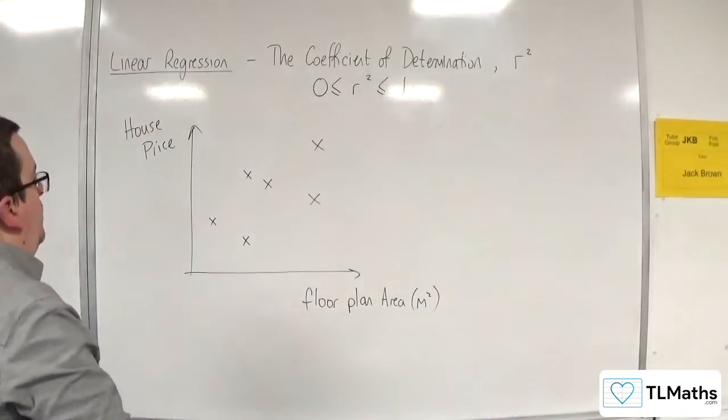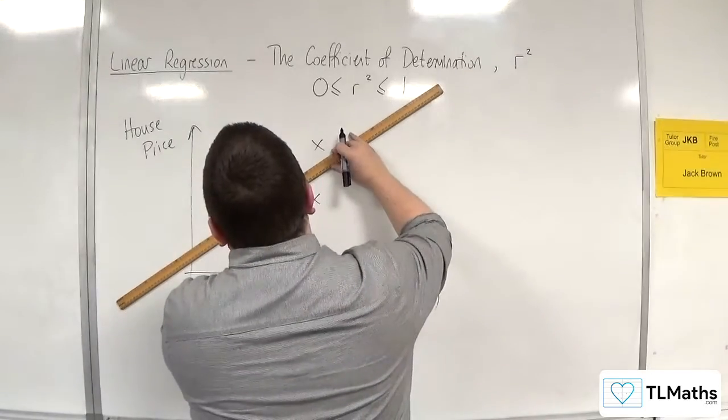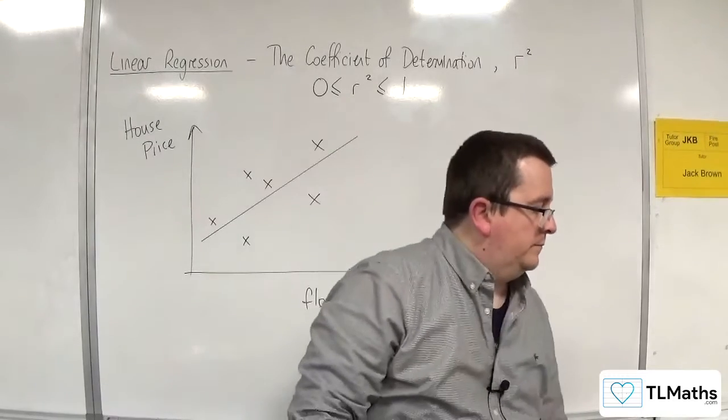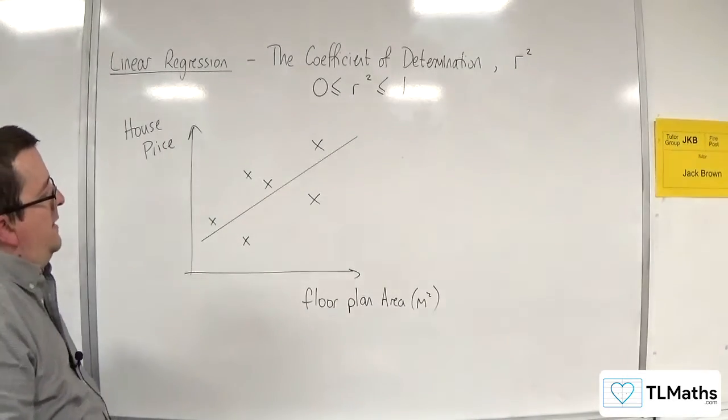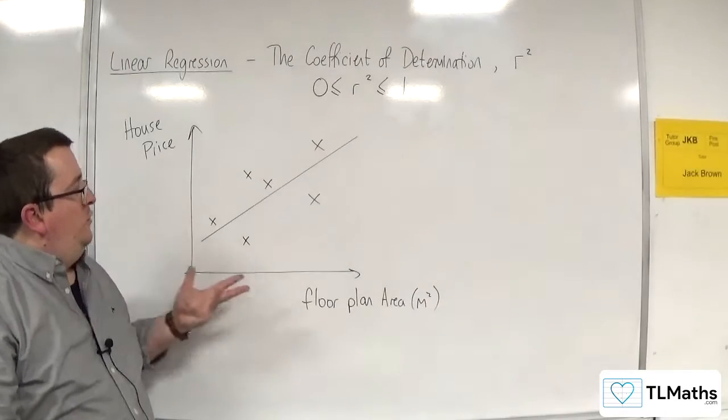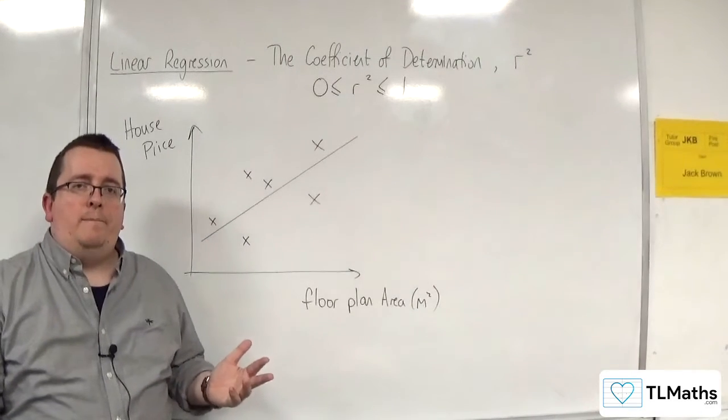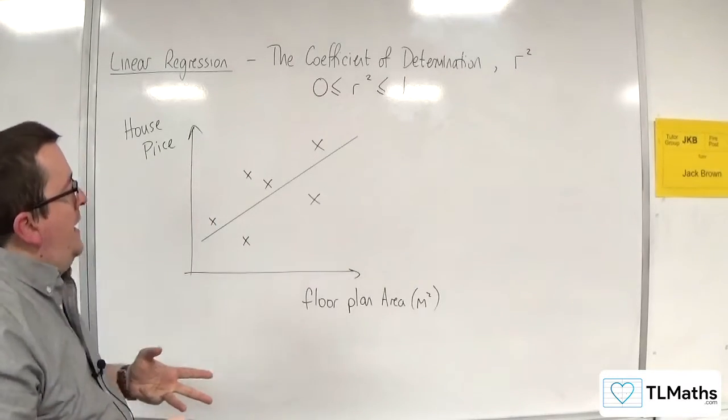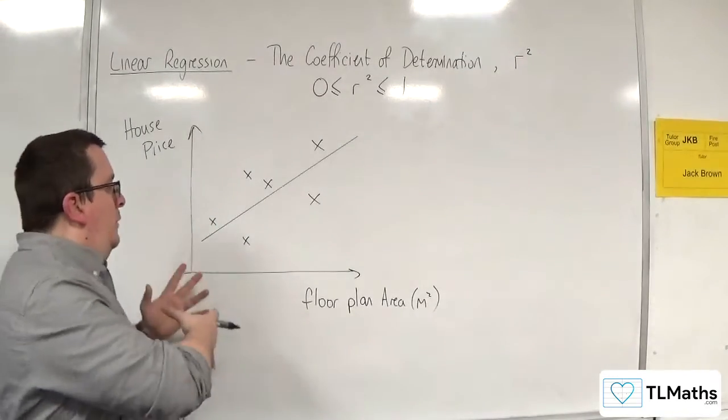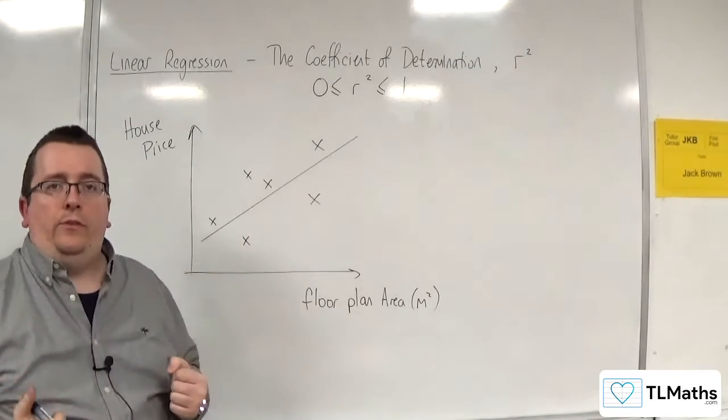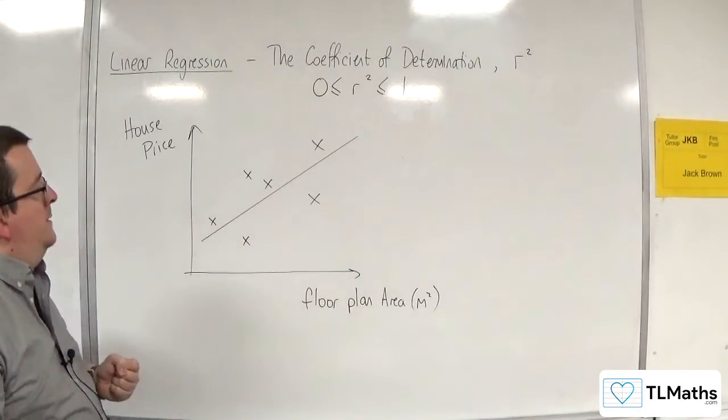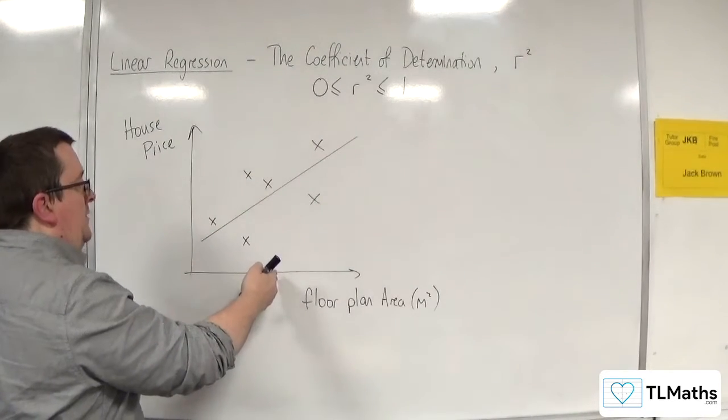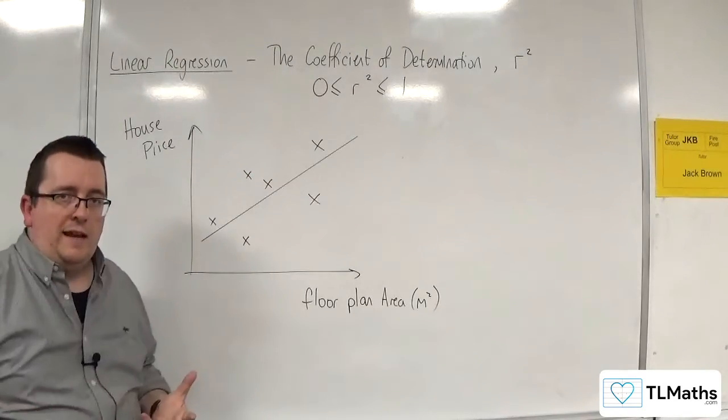And then we draw a least squares regression line. Maybe it looks something like that. Having drawn the regression line, remember that is our predictive model. So if I wanted to work out the price, the potential price of a house given its square metre floor plan, I should be able to go up from the X axis, horizontal axis, to my line, then to my vertical axis.